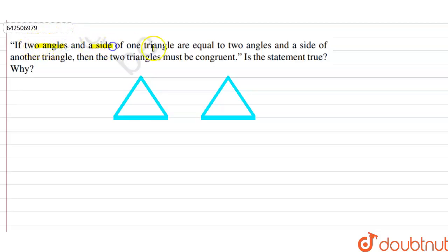Hi students, our question is: if two angles and one side of one triangle are equal to two angles and one side of another triangle, then the two triangles must be congruent.